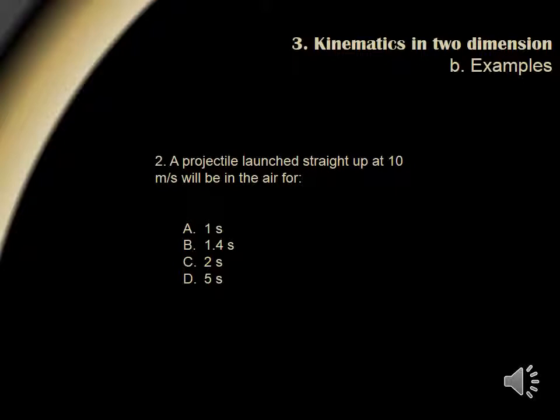Question 2. A projectile launched straight up at 10 meters per second will be in the air for 1 second, 1.4 seconds, 2 seconds, or 5 seconds. Assuming a gravitational acceleration of 10 meters per second squared, an object may start from rest and reach 10 meters per second in 1 second. A projectile is launched straight up at 10 meters per second. Thus, it will be in the air for 1 second up and 1 second down, totaling 2 seconds.